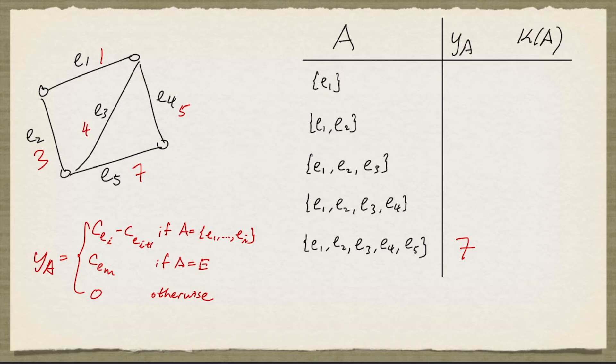Let's go back to a equal to set e1. So it is the cost of e1 minus the cost of e2. So that's negative 2. And for a equal e1, e2, it's the cost of e2 minus the cost of e3. So 3 minus 4, that's negative 1. The next one would be 4 minus 5, that's negative 1. And the next one is 5 minus 7, and that's negative 2.